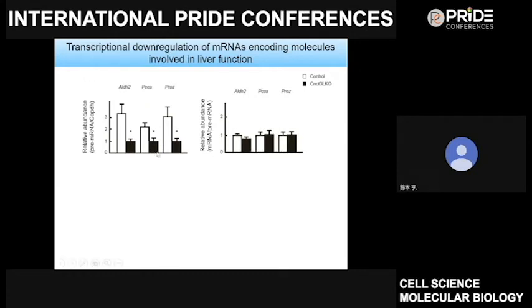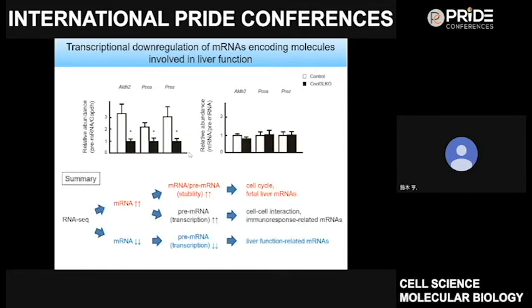We confirmed that pre-mRNA of genes involved in liver function are decreased in the absence of CNOT3 by performing RT-PCR analysis. To summarize: we obtained information on several mRNAs upregulated or downregulated in CNOT3 knockout liver. By examining pre-mRNA expression, we identified candidates of stabilized mRNA, transcriptionally increased mRNA, and transcriptionally decreased mRNA. Cell-cycle mRNAs and fetal liver-specific mRNAs are stabilized in the absence of CNOT3. mRNAs involved in cell-cell interaction and immune response are transcriptionally increased, while mRNAs whose protein products are involved in liver function are transcriptionally downregulated.